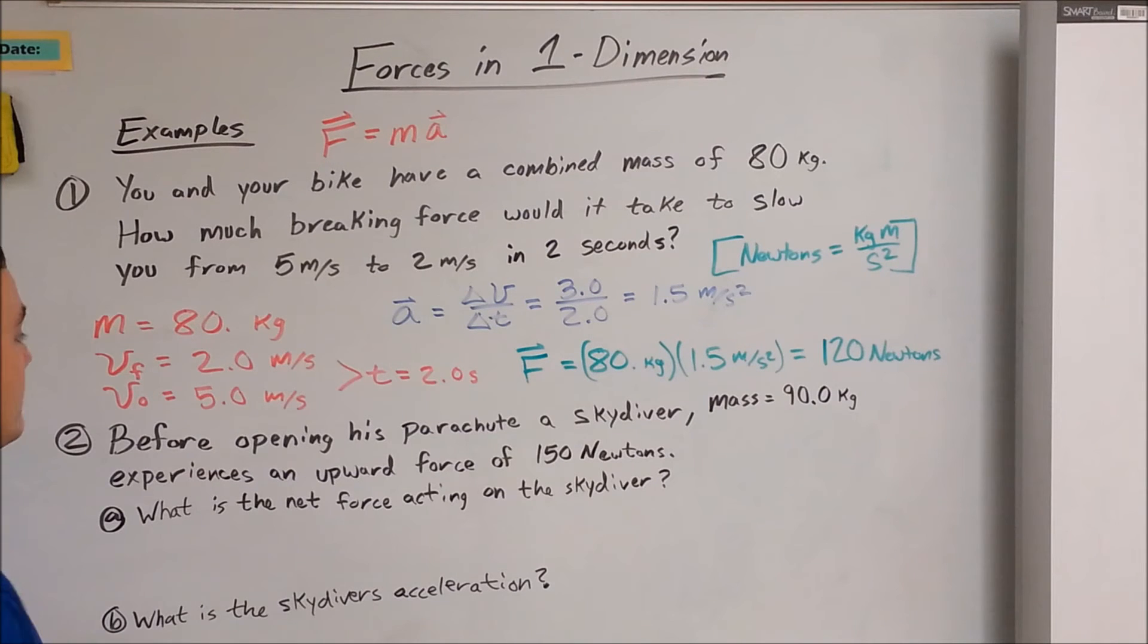Okay, next problem. Before opening a parachute, a skydiver with mass 90 kilograms experiences an upward force of 150 newtons. So first we should picture this before answering any questions. We have a skydiver with a free body diagram. Force being pulled downward is his mass times acceleration, which would be 90 - well, we'll just say mg for now. And then we also know there's an upward force from air resistance of 150 newtons.